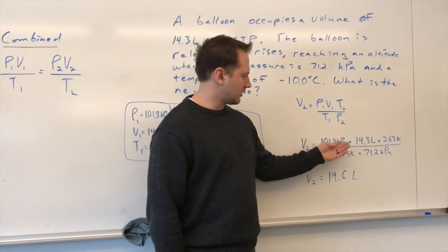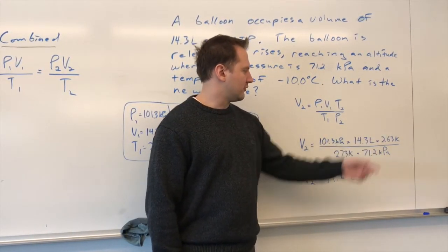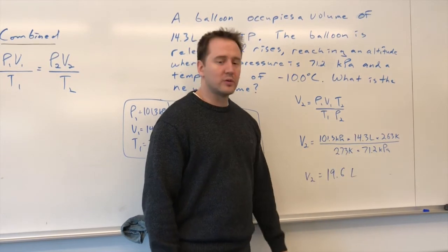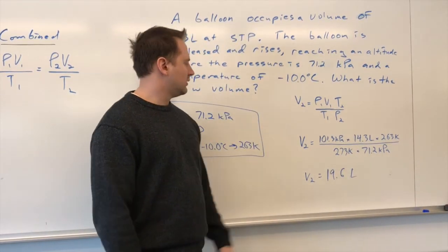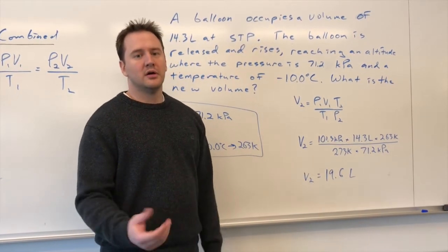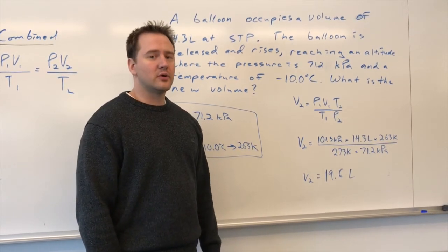And the units that would cancel out, obviously here, kilopascals cancels out, Kelvin cancels out, and liters is what you're left with. And since it's all multiplication and division here, the lowest amount of sig figs you were given in the problem is 3, therefore your answer should be reported to 3 sig figs.